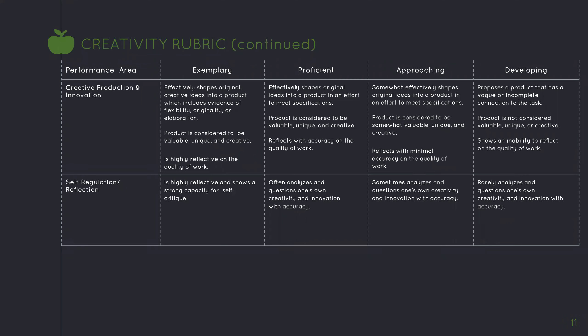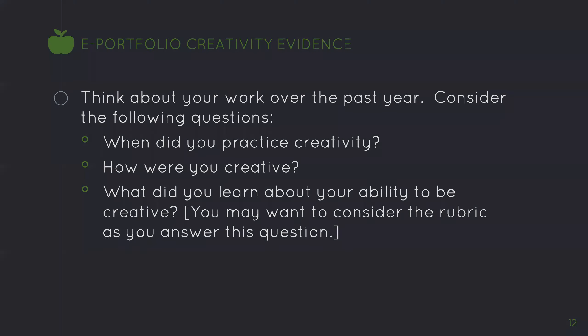At this time, you should review the proficient column of this rubric. Advisors, this video can be stopped now and resumed in five minutes. Now, think about your work over the past year. Consider the following questions: When did you practice creativity? How were you creative? What did you learn about your ability to be creative? You may want to consider the rubric as you answer these questions.